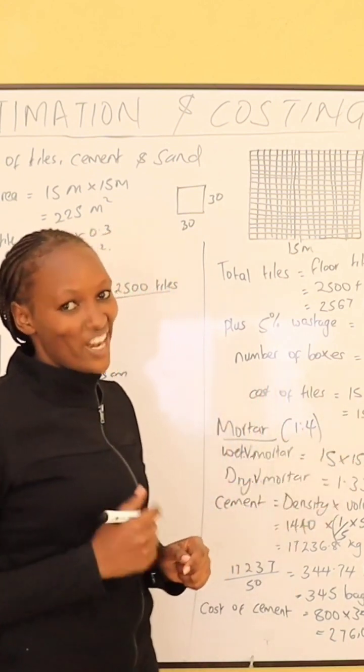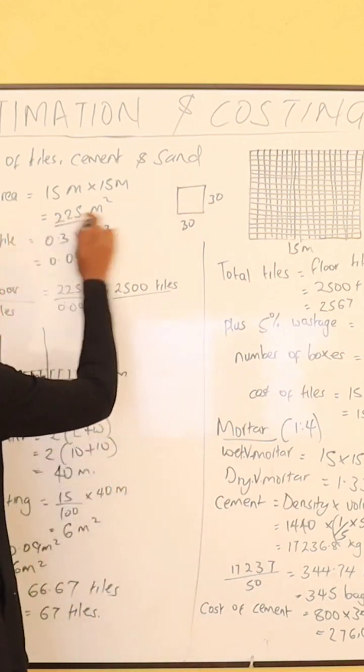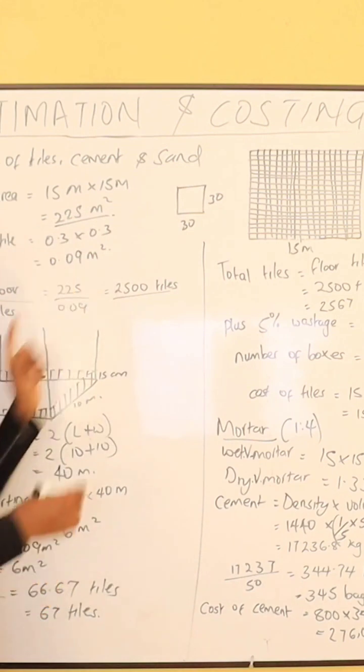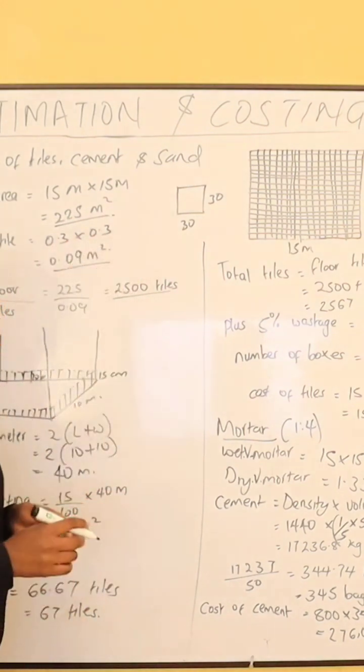The area of one tile is 0.3 by 0.3, which equals 0.09 meters squared.